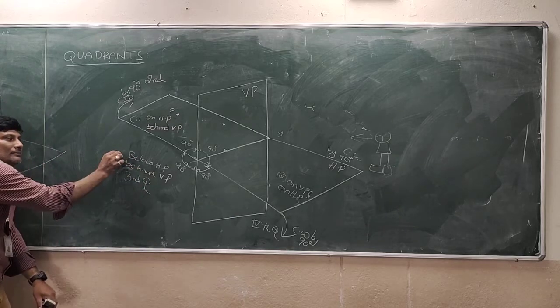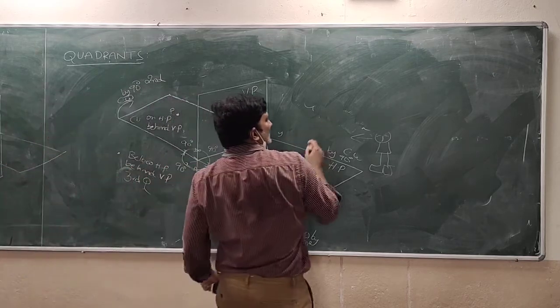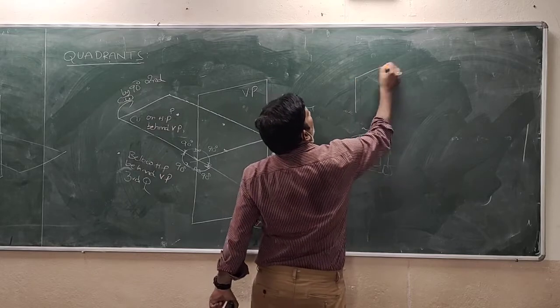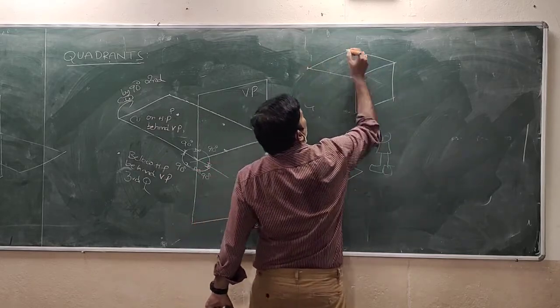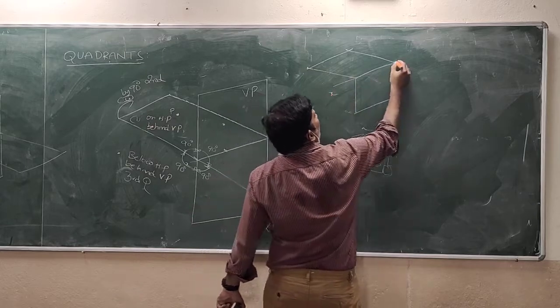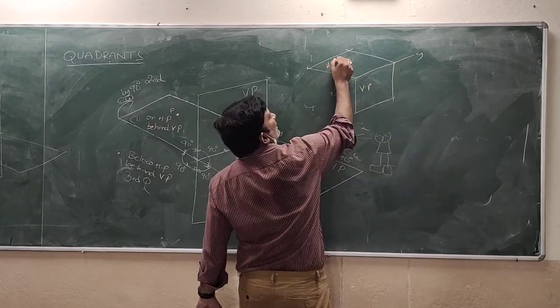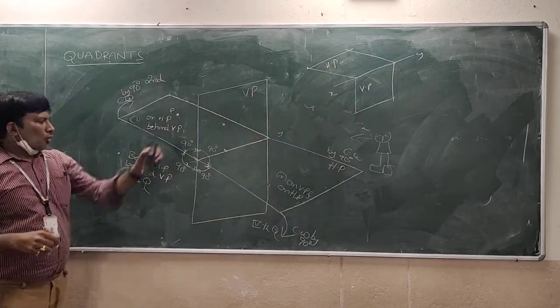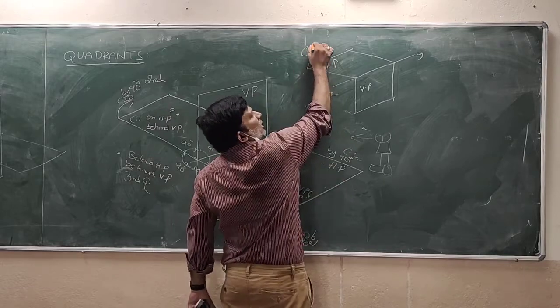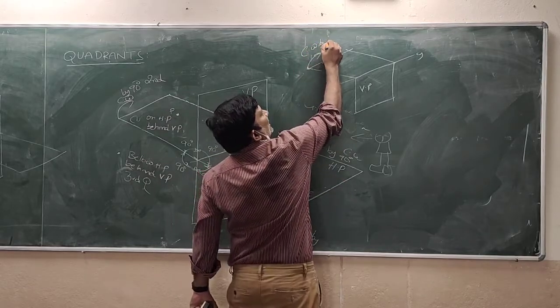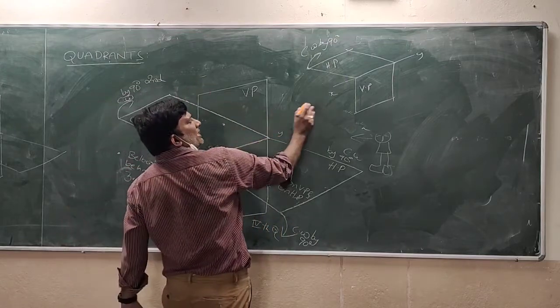Now I will show you - you can see the XY reference line, vertical plane, and this is the horizontal plane. Now, this plane is not constant - it is moving in the clockwise direction by 90 degrees. The point will be here.